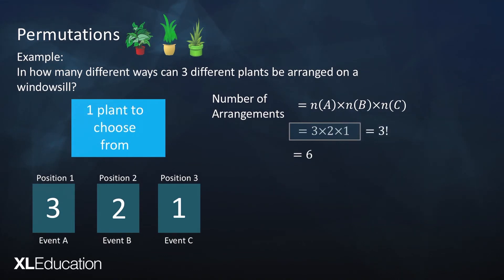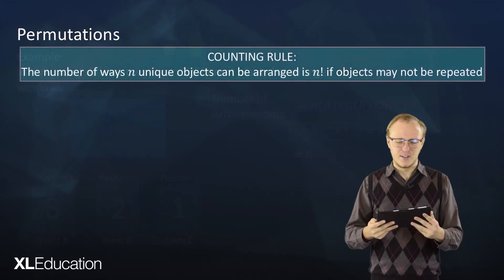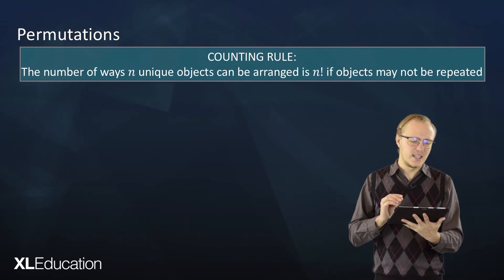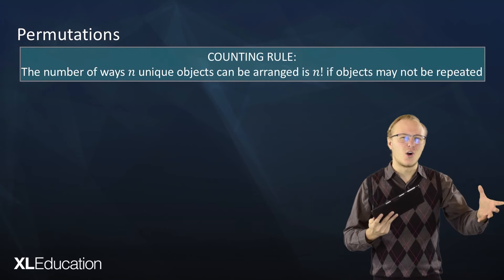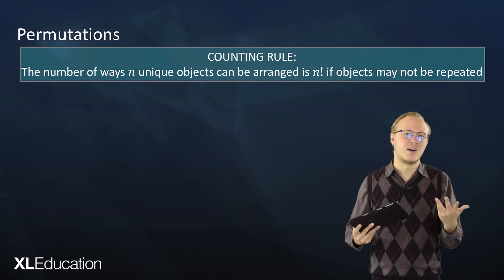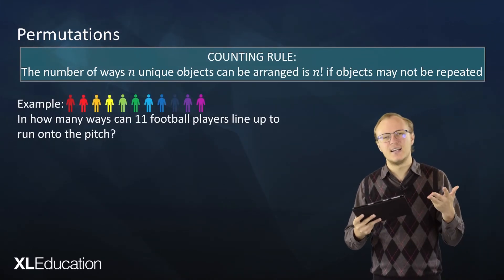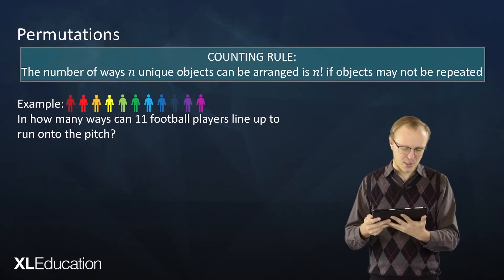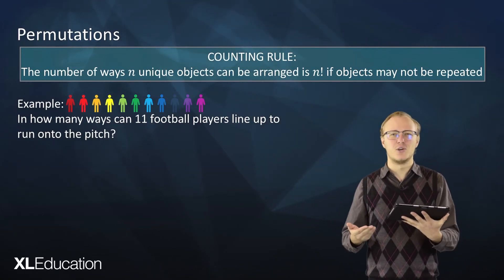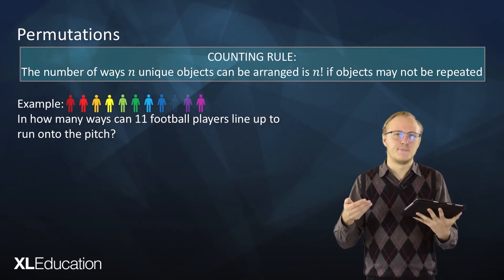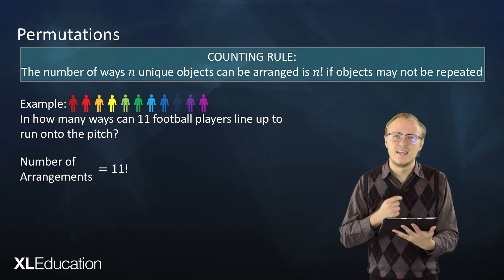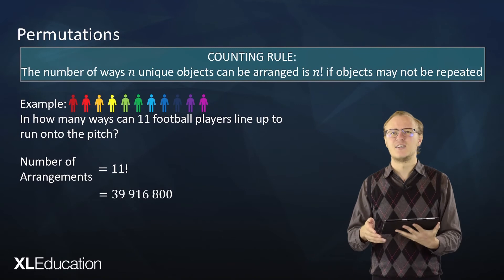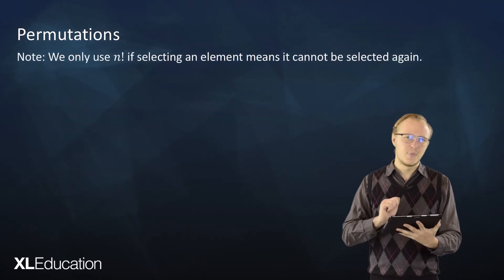Notice that three times two times one is equal to three factorial — and now we can see the use of factorial notation. The counting rule is: the number of ways n unique objects can be arranged is n factorial, if objects may not be repeated. For example, in how many ways can 11 football players line up to run onto the pitch? There are 11 unique players and we can't repeat a player, so the answer is 11 factorial, which equals 39,916,800.